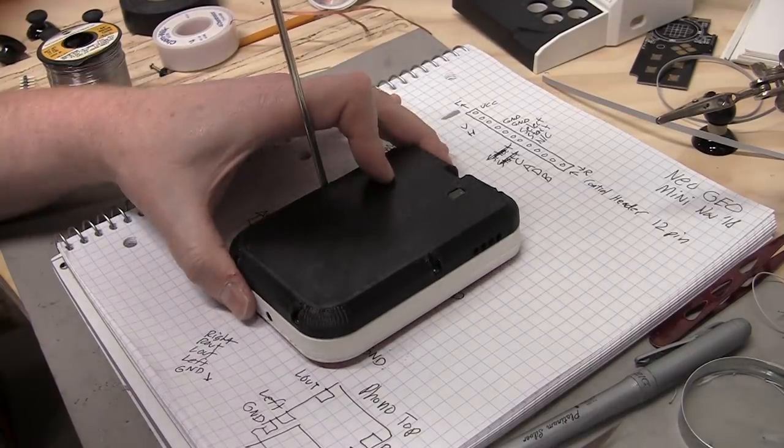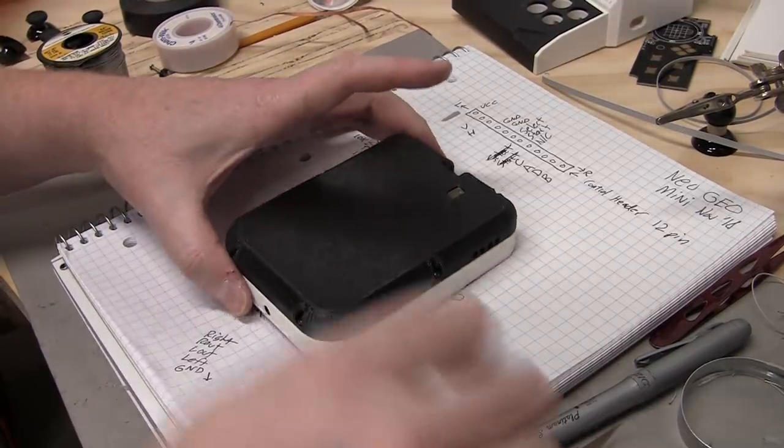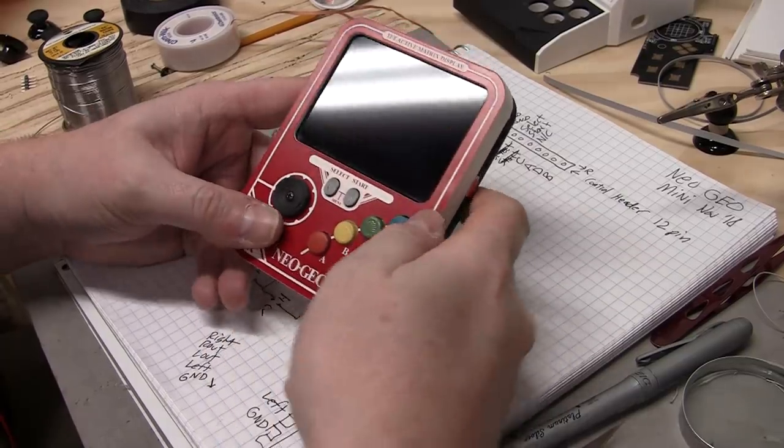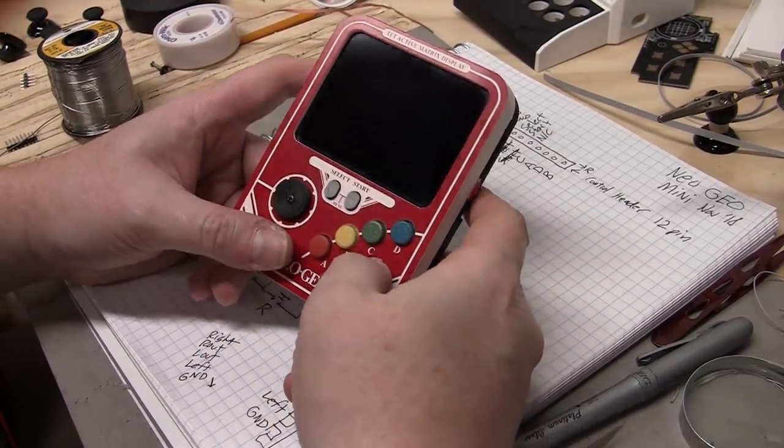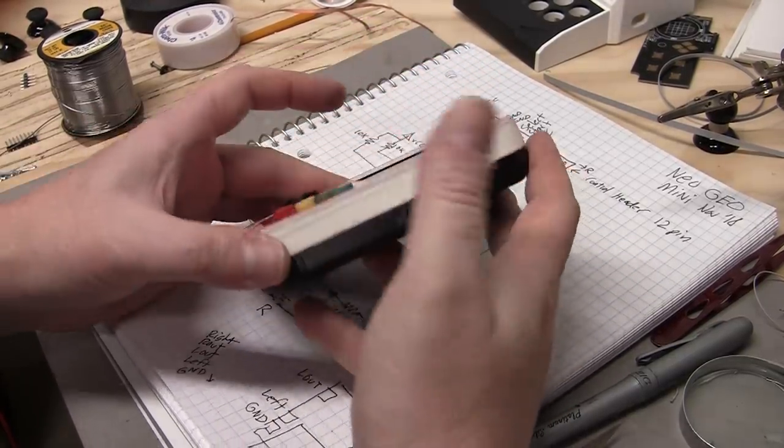Get this last screw here. Okay. All right, let's take a look. Oh, there it is. Beauty. A mini Neo Geo.